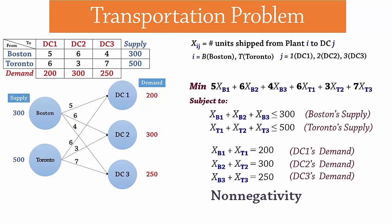For non-negativity, we can either list all the variables and state that each is greater than or equal to 0 or we can simply write, XIJ is greater or equal to 0 for all I and J.